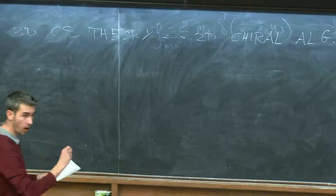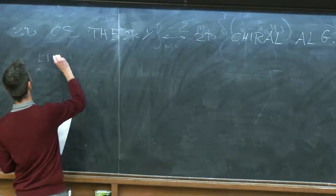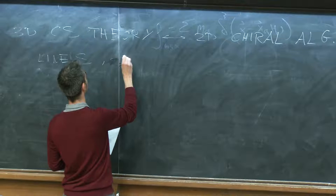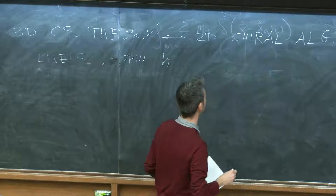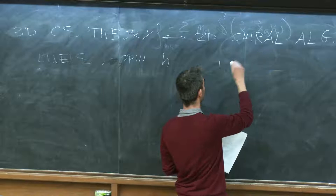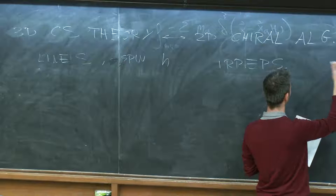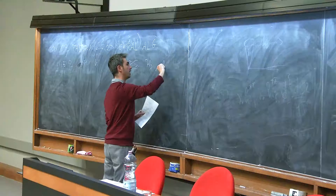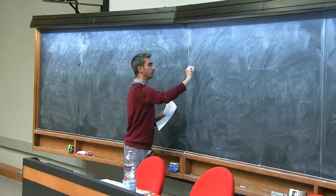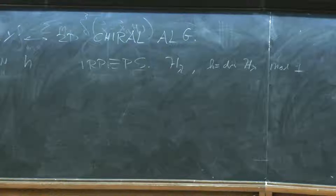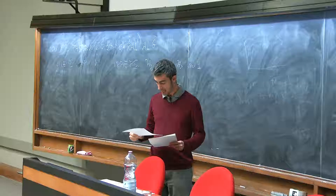We mentioned a small piece of this correspondence. In particular, if we are interested in the spectrum of lines and their spin H, we can read it off the chiral algebra because this corresponds to the irreducible representations of this algebra. And their conformal dimension, the conformal dimension of the primary, these were H_lambda, and H is the dimension of H_lambda mod 1, because the spin is defined mod 1.